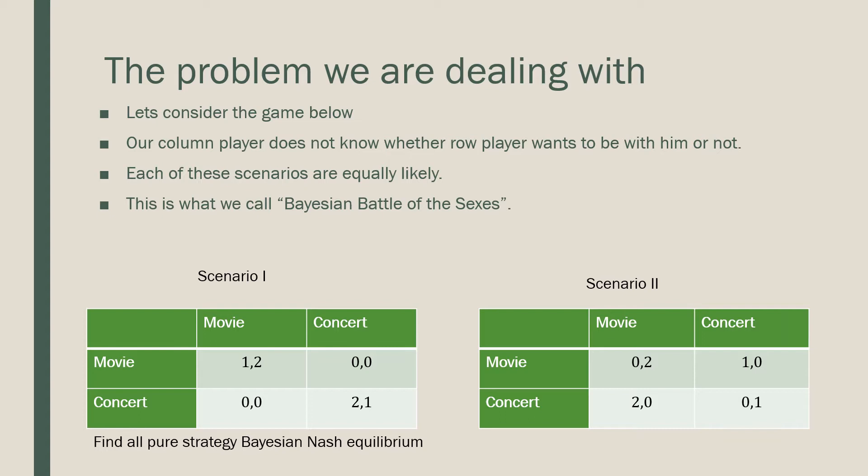So this is the story. Our column player does not know whether the row player wants to be with him or not. Each of these scenarios are equally likely and this is a case which is most famously known as Bayesian Battle of the Sexes, and our goal here is to find all pure strategy Bayesian Nash Equilibria in this game.